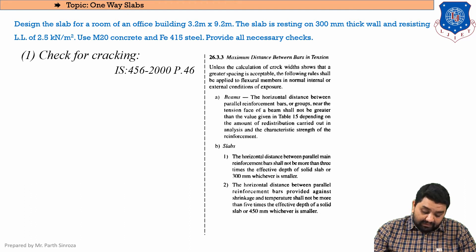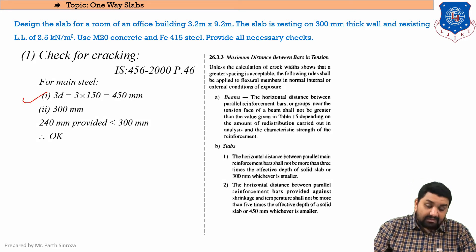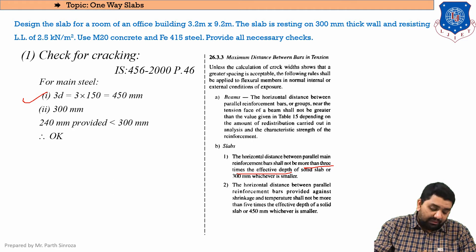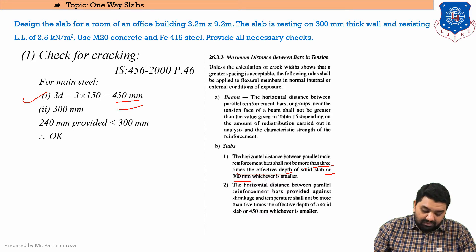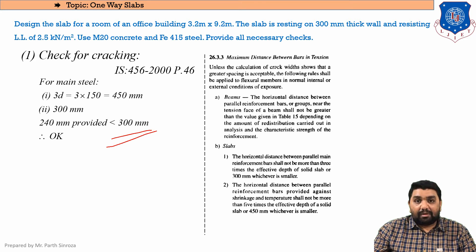For main steel, the spacing shall not be more than three times the effective depth of the solid slab or 300 mm, whichever is smaller. So: 3d = 3 × 150 = 450 mm, and the second case is 300 mm. The smaller value is 300 mm. The spacing we provided was 240 mm.